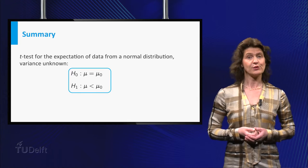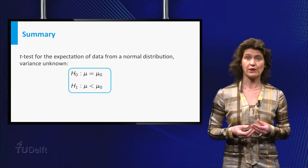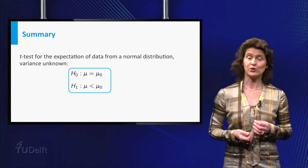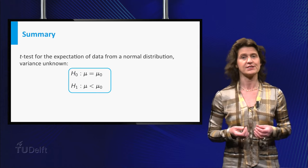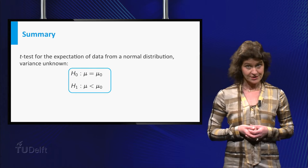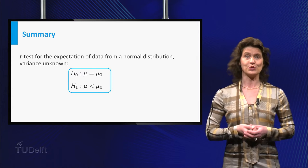So you learned that if you want to test hypotheses comparing an expectation to an a priori given value in the case of normally distributed data with unknown variance, you can use the t-test to do this.